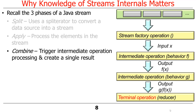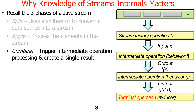The third and final phase is the combine phase, which triggers the intermediate operation processing when a terminal operation is hit and a single result is created. What's important here is to understand which of these phases you can control and which you can't, and perhaps even more importantly, the ways in which you can control these various phases.